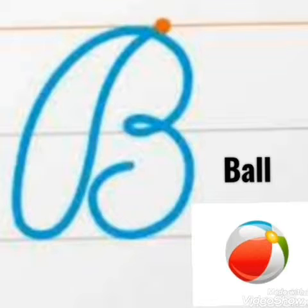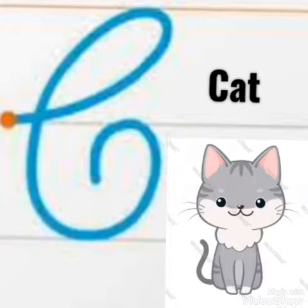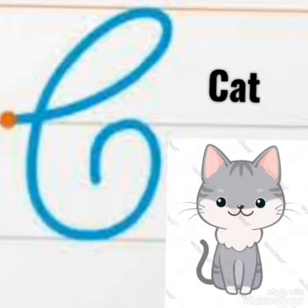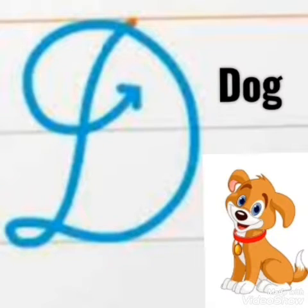And B for Ball. And next, capital cursive C. C for Cat. And after C for Cat, which alphabet did we learn? Capital cursive D. And D for Dog.